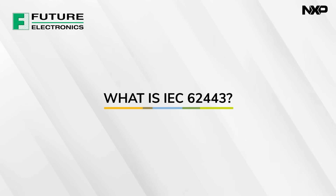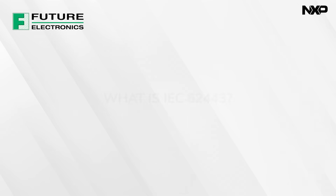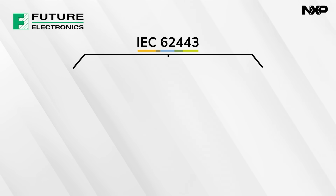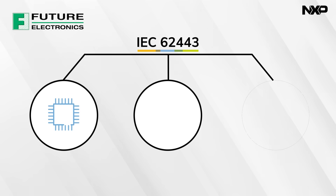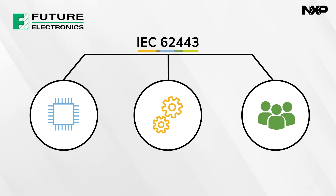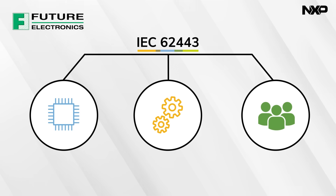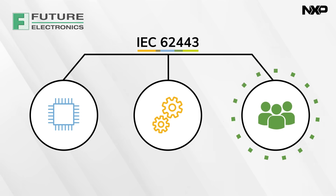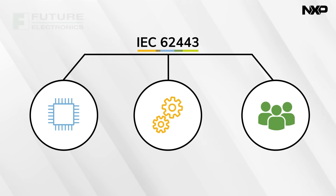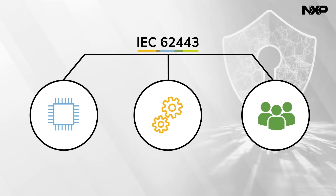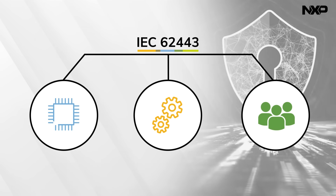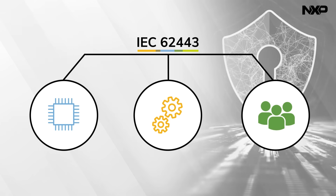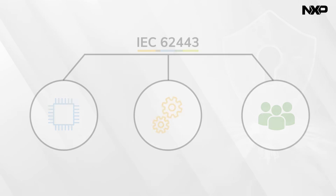IEC 62443 is a series of standards that address cybersecurity for industrial IoT systems and is based on best practices for the technology, processes, and users of these systems. Implementing these standards can prevent attacks or mitigate their effects.